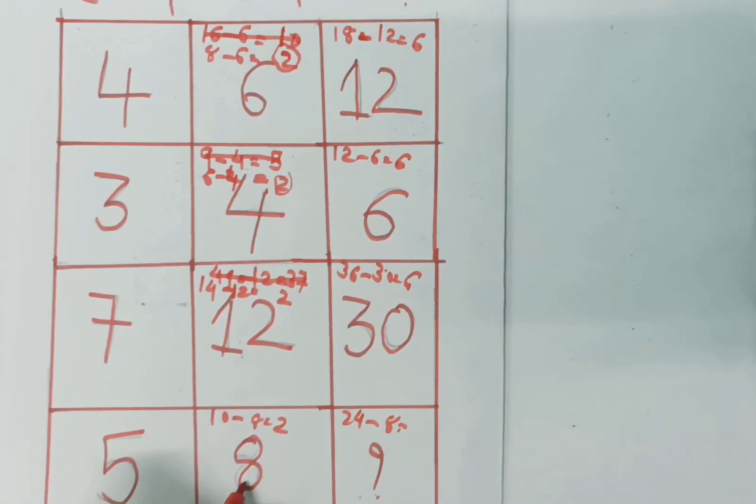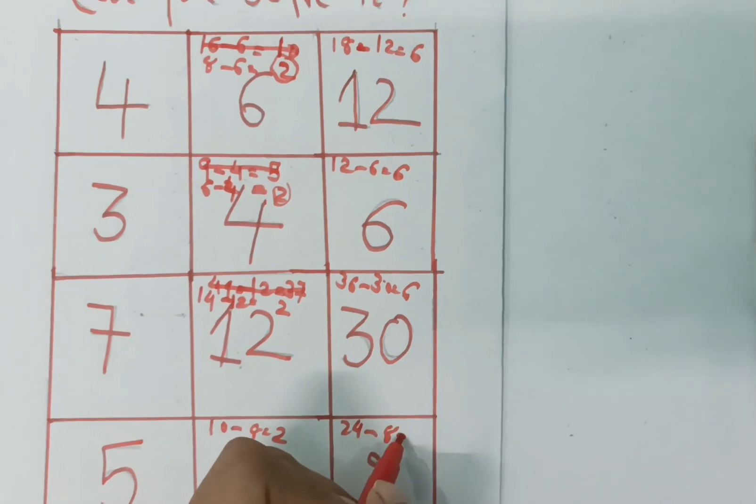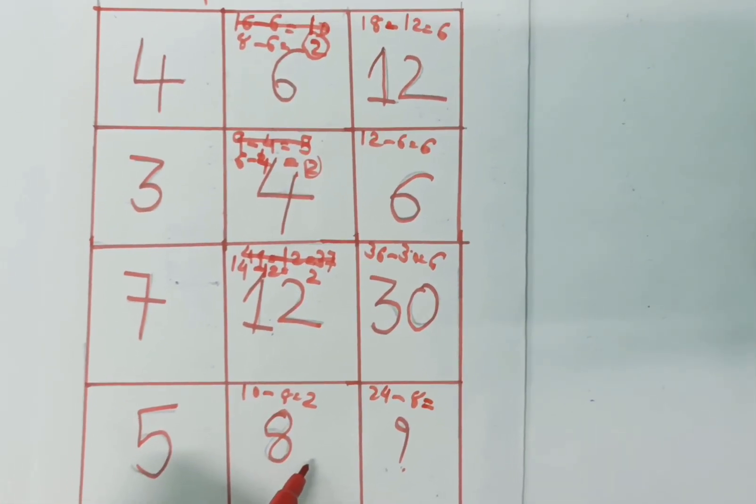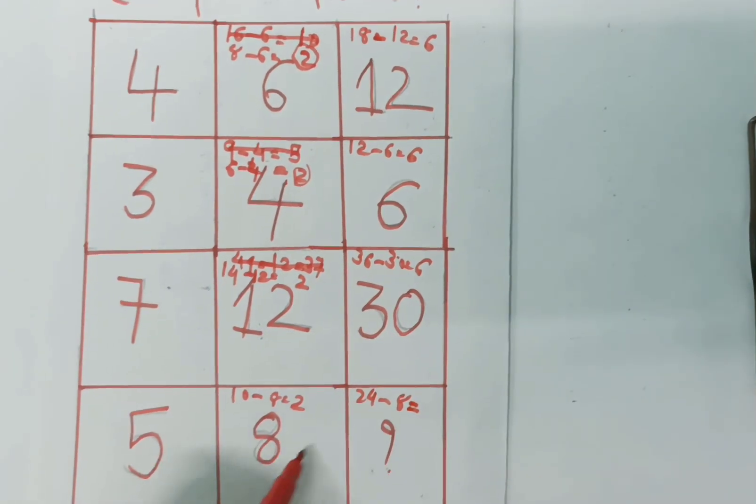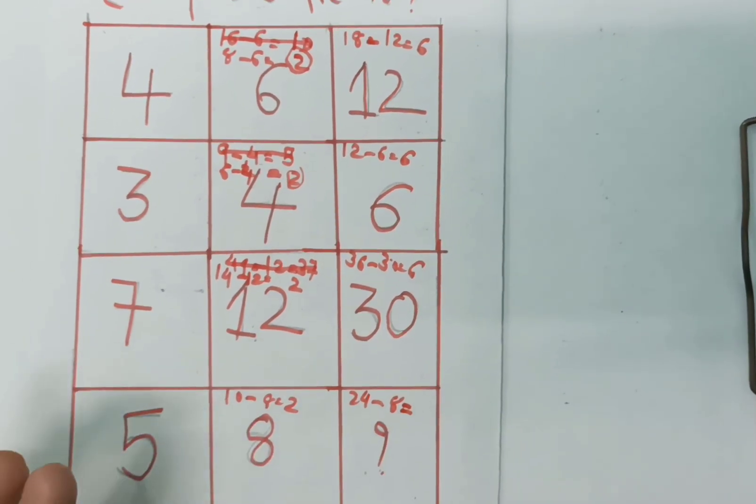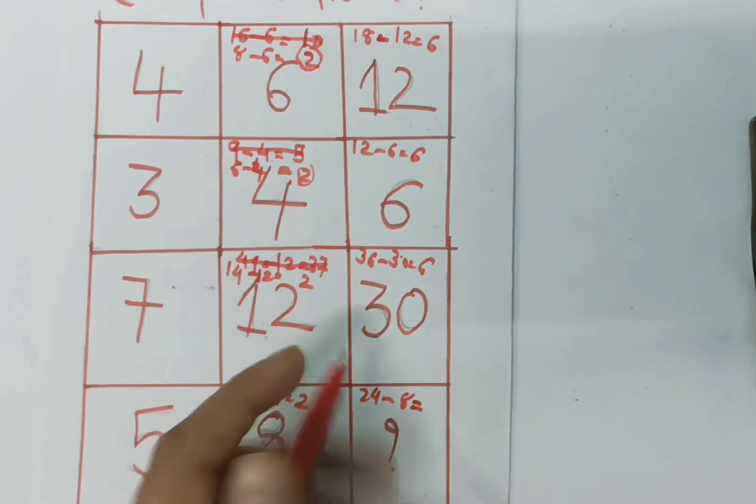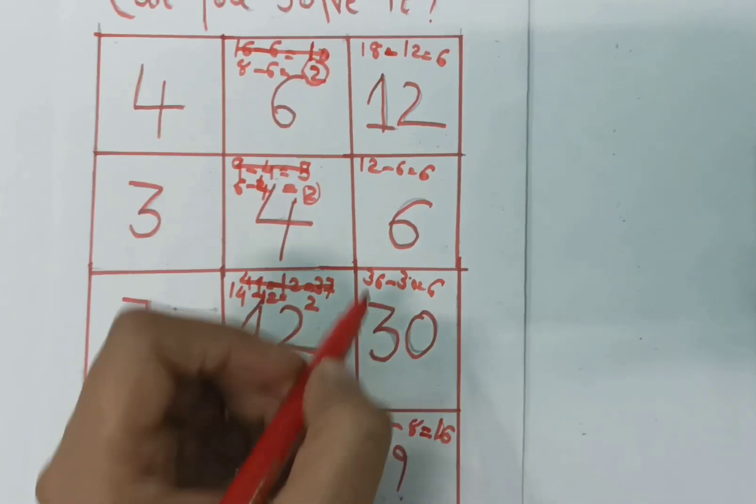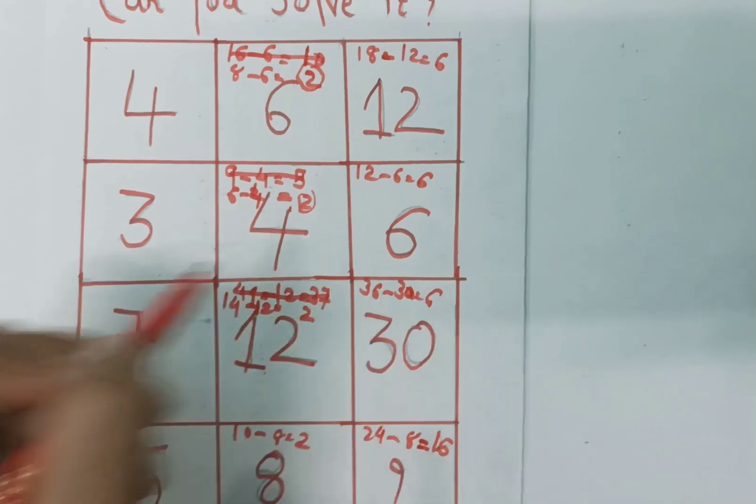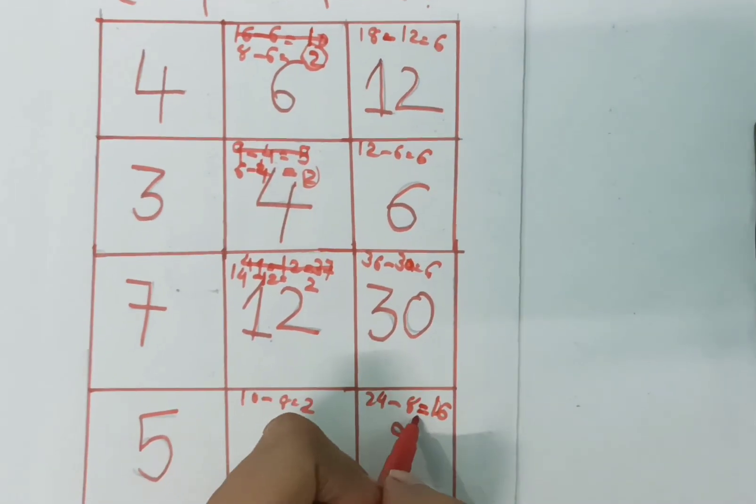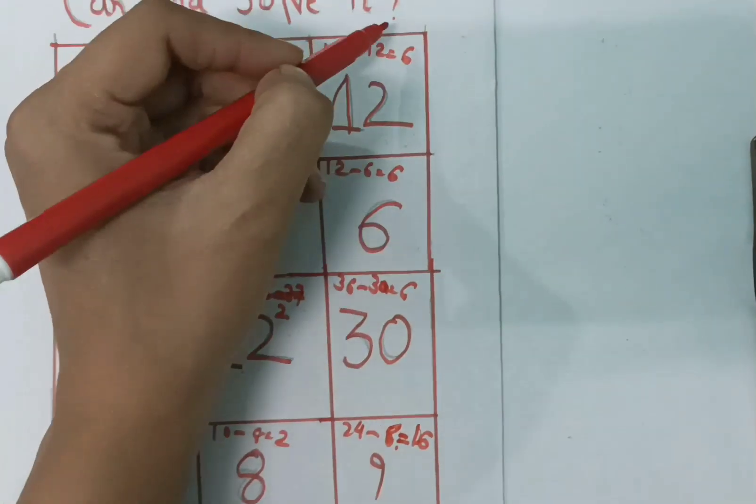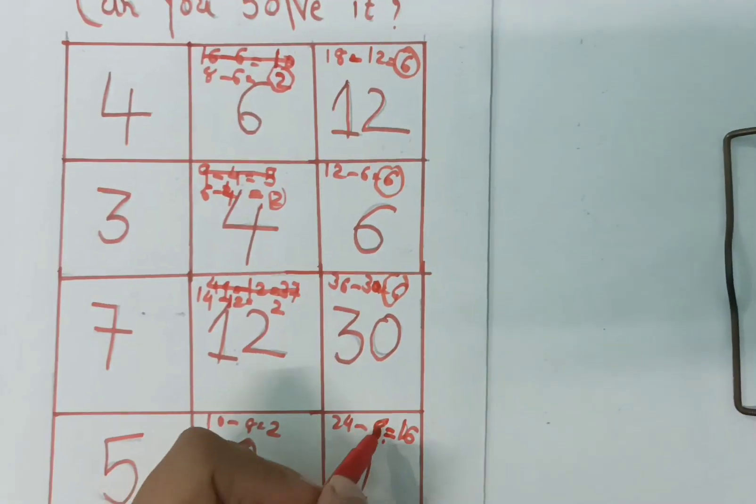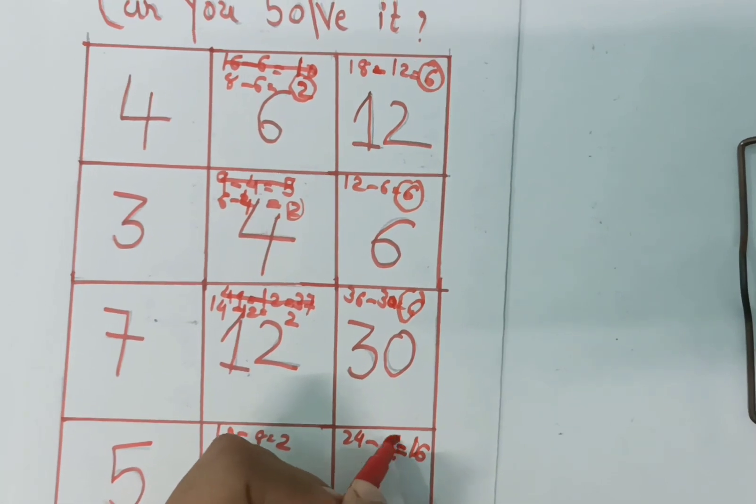8 times 3 is 24, and minus 8... So what is the answer to this question? The answer is 16... wait, here we have to minus 6 because the difference is 6. The difference is 6, difference is 6.